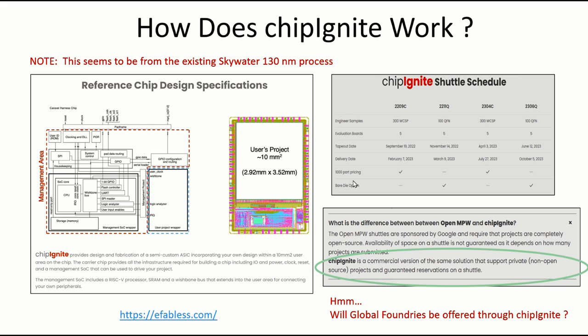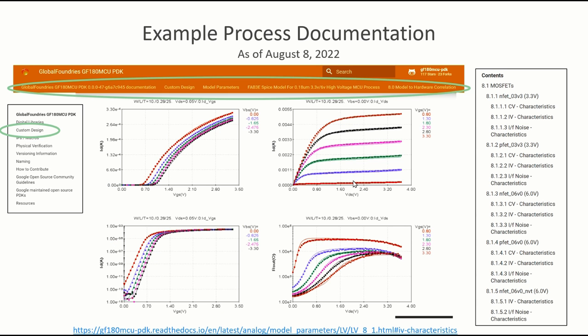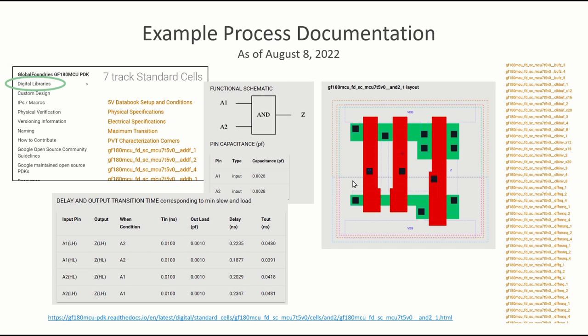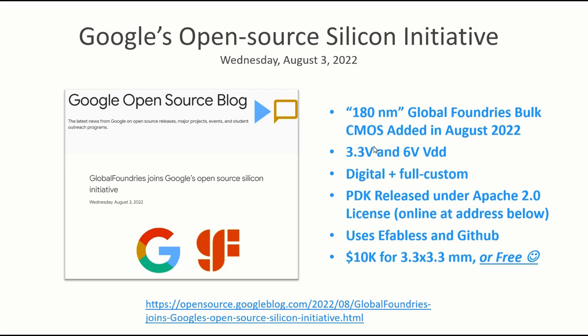What I'm going to cover in this video is just a quick look at how this process works. I'll look at some of the online documentation that's currently out there, including the device characteristic curves for MOSFETs and things like the library of digital cells available. So let's get started with these bullet points.